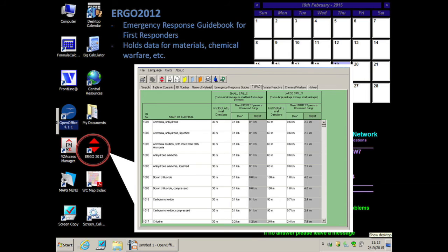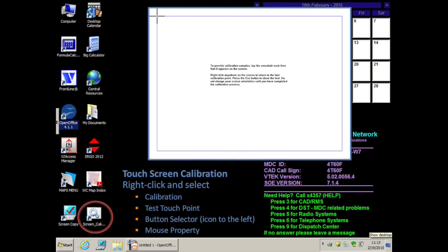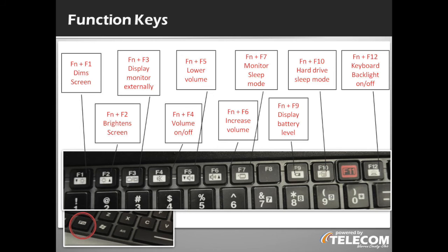Ergo 2012 is the Emergency Response Guidebook. WC Map Index is more commonly known as the Bingo Map. It is updated every spring and includes hyperlinked cells referenced by dispatchers so that you can zoom into small regions of the county to view streets, waterways, hydrants, and other features. Screen calibration walks you through the realignment of your touchscreen, ensuring where you press is what's activated. Function keys are all active except for F11, which is not linked to your emergency button. They control standard shortcuts such as screen brightness, volume, and keyboard backlight.